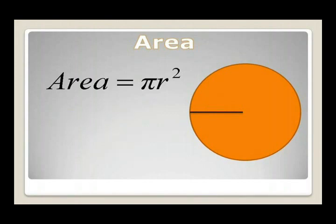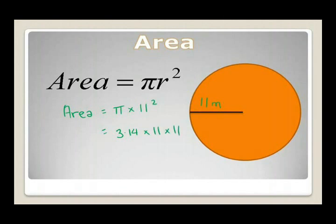Let's look at another example. In this example we have a radius of 11 m. We substitute in the values: area = π × 11 × 11 = 3.14 × 11 × 11, which equals 380.13 m². When working with area, it is just a simple matter of substituting the radius into the formula πr².